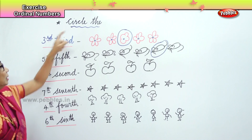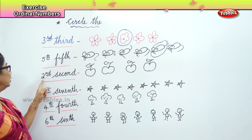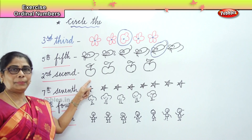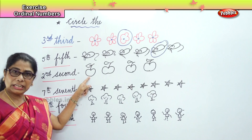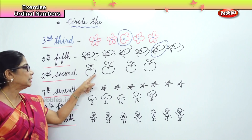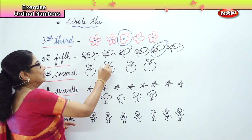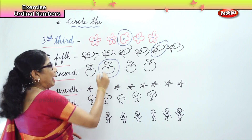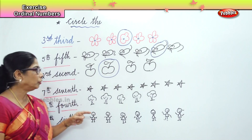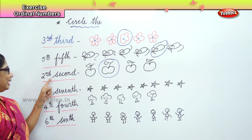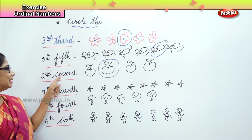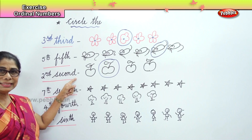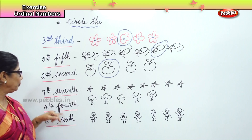Next, circle the second apple. First, second — this is the second apple. How do you spell second? S-E-C-O-N-D. Second.